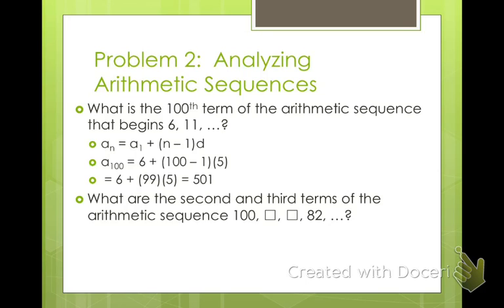What are the second and the third terms of this arithmetic sequence? 100, something, something, 82. Now, for this one, we have our first term and we have our fourth term. But we don't know what our difference is. But we do know that there are 1, 2, 3 common differences between 100 and 82. So we can rewrite this as our fourth term, 82 equals 100 plus 3 differences. We don't know what the difference is, but then we can just solve for D. So subtract 100 from both sides, divide by 3, and you get D is negative 6. So that means from one term to the next one, we subtract 6. So 100 minus 6 is 94. 94 minus 6 is 88, and 88 minus 6 is 82.